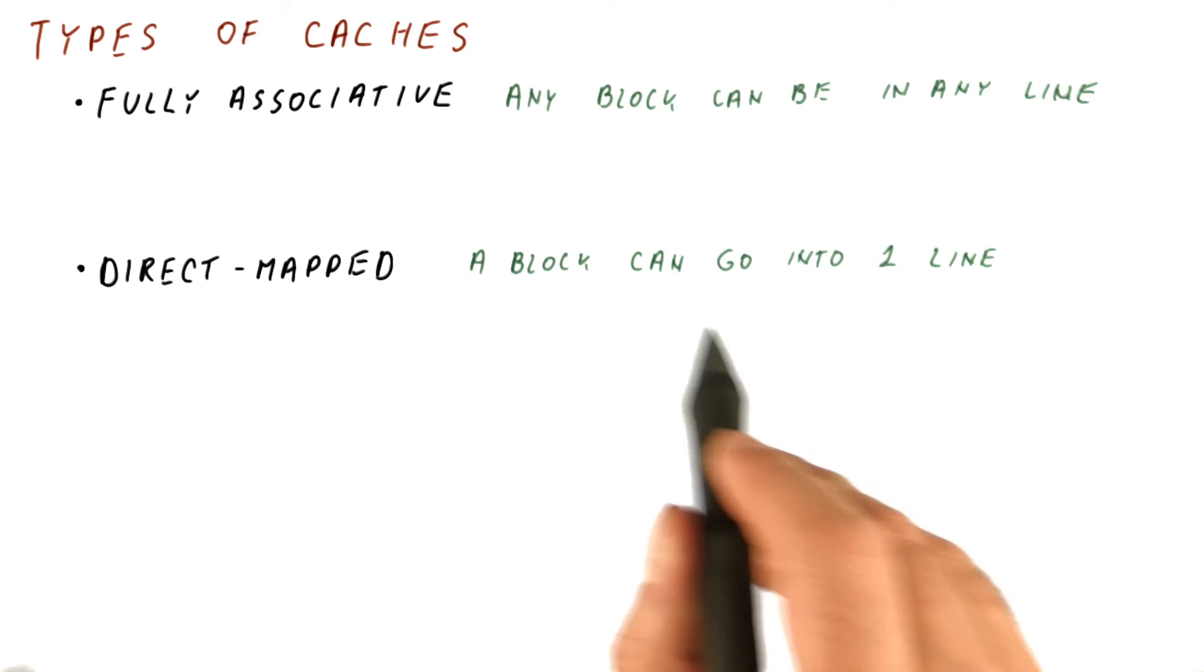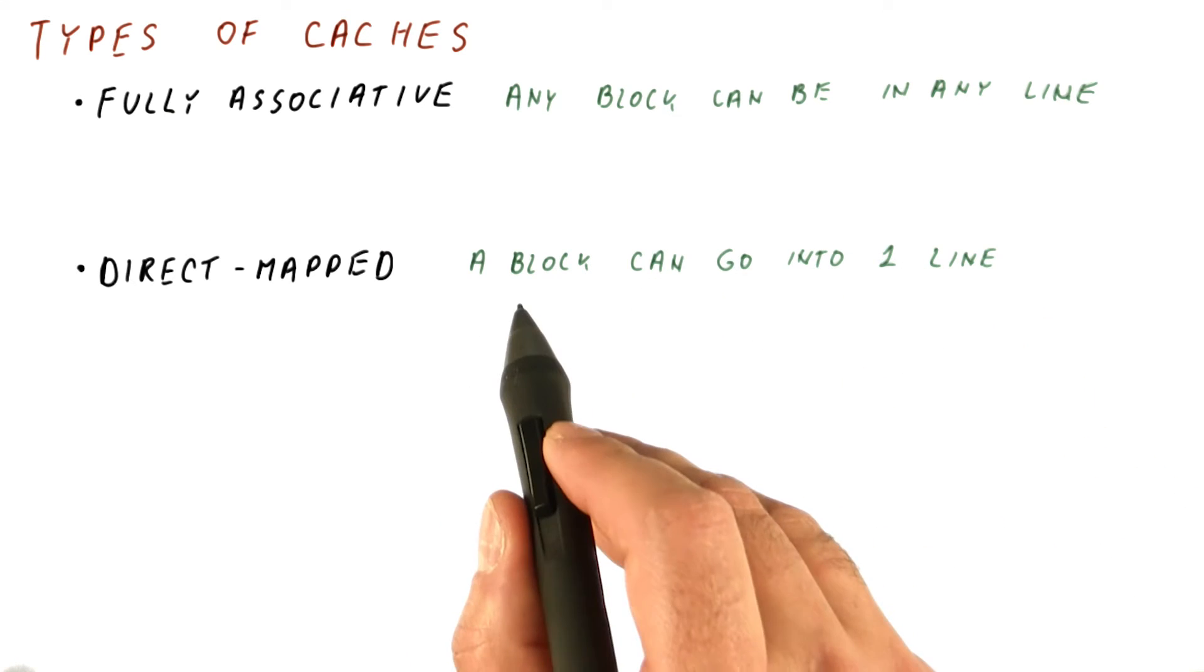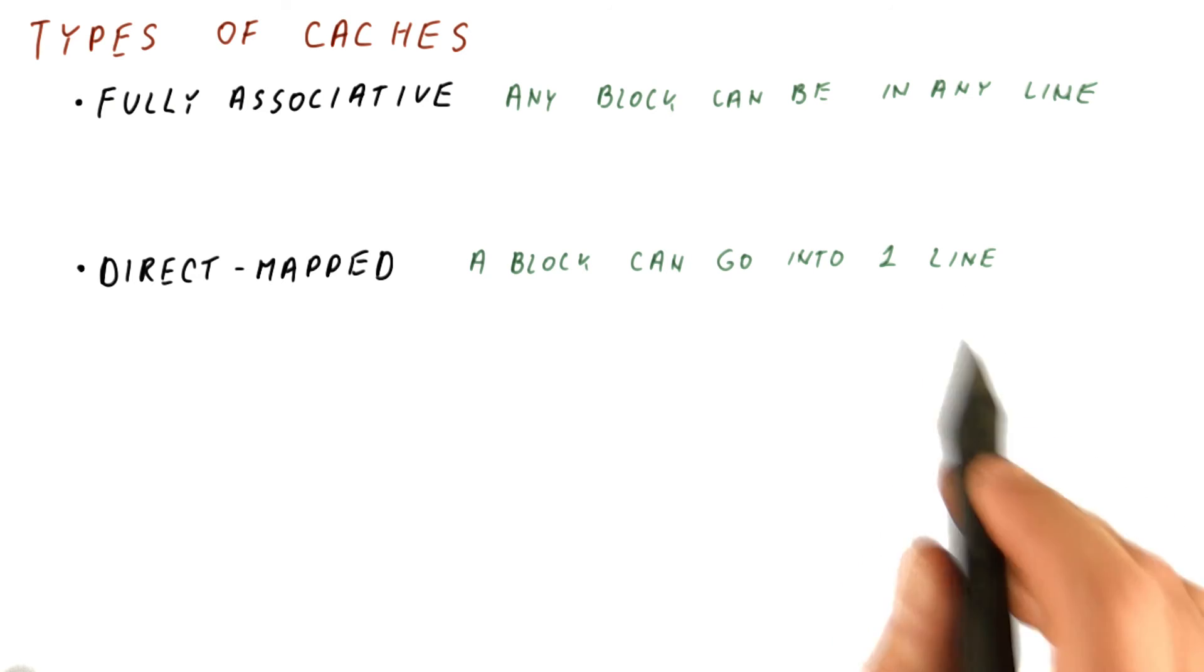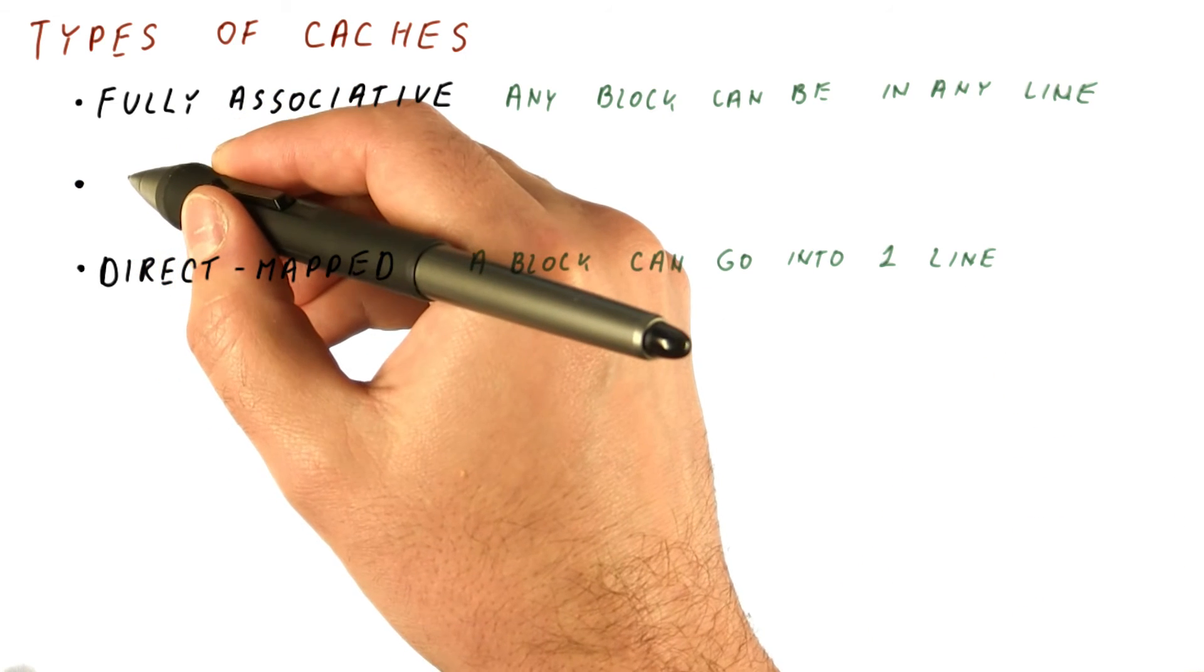Different blocks can still map to different lines, but a particular block can only go into one place in the cache. And then, of course, there is the middle ground between them,